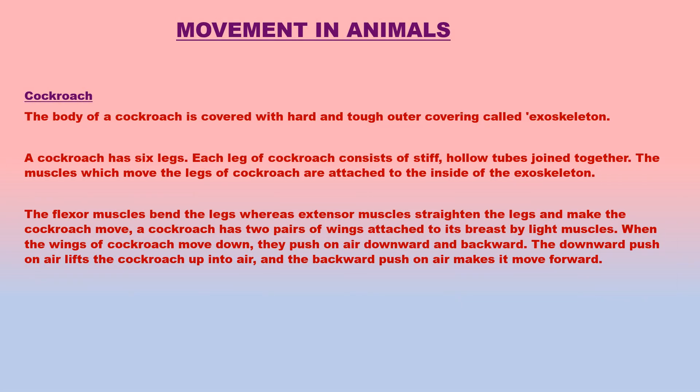A cockroach has six legs, three on each side of its body, and moves by using its legs. Each leg consists of stiff, hollow tubes joined together, moved easily by muscles attached to the inside of the exoskeleton. Flexor muscles bend the legs and extensor muscles straighten them. A cockroach also has two pairs of wings attached to its breast by flight muscles, and flies by moving its wings up and down. The downward push on air lifts the cockroach up, and the backward push makes it move forward.